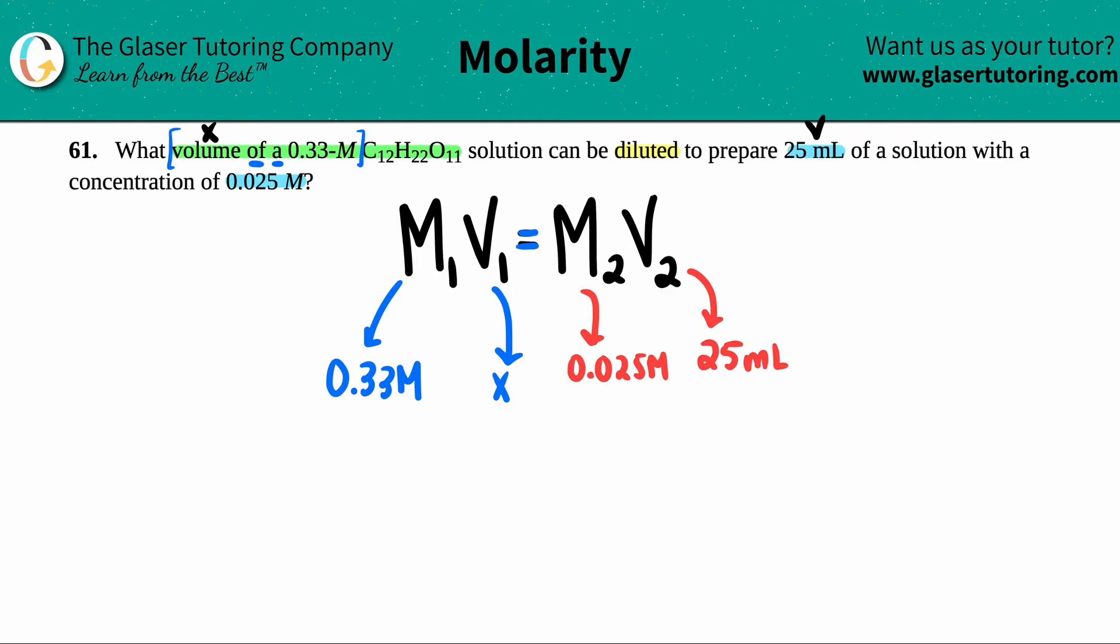Okie dokie. Now the good thing with this formula is that your volumes could be in milliliters, they could be in liters, they could be any volume. Mainly because your volume units are going to cancel out. Remember when we did molarity equals moles over liters? This is the other molarity formula that you have to remember. This was specific towards liters. However, in your dilution formula, you could use liters, you could use milliliters. The unit of the volume just has to be the same for both V1 and V2. So I can keep the 25 mils here.